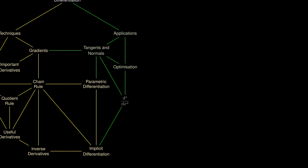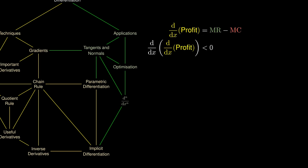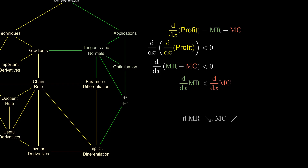A very useful application is in economics. The profit earned by a company is the difference between its revenue and its cost. To maximize profit, we calculate the derivative of the profit. The derivative of revenue is the marginal revenue, and the derivative of cost is the marginal cost. For a firm to maximize profit, the derivative of profit ought to be zero — giving the first condition that marginal revenue equals marginal cost. To ensure this is a maximum, the second derivative must be negative, meaning the derivative of marginal revenue must be smaller than the derivative of marginal cost. This is satisfied when marginal revenue is decreasing and marginal cost is increasing.